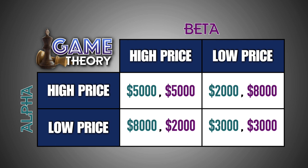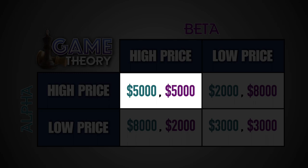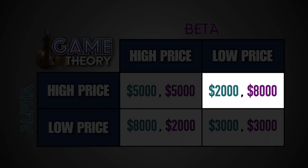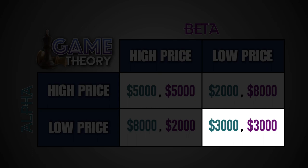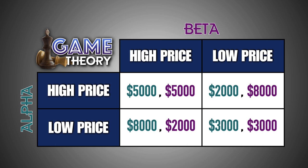Now that we've covered game theory strategies and outcomes, let's practice with different game theory scenarios. Assume that Alpha and Beta are non-colluding firms in an oligopolistic market. They have the choice to set their prices high or set their prices low, and their potential daily profits are listed in the matrix provided. Both firms are aware of the potential payoffs, but their choices are hidden from each other. If both firms set their prices high, they will both earn $5,000 in daily profit. If Alpha sets its price high and Beta sets its price low, Alpha will only earn $2,000 in daily profit, while Beta will earn $8,000. If Alpha sets its price low and Beta sets its price high, Alpha will earn $8,000 in daily profit, while Beta will only earn $2,000. If both firms set their prices low, they will both earn $3,000 in daily profit. Let's use these potential payoffs to determine the strategies for each firm and the likely outcome of this game theory scenario.